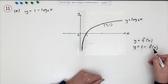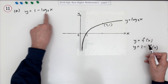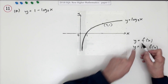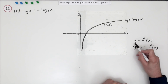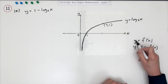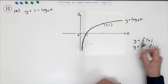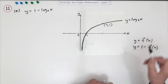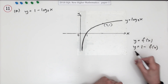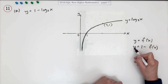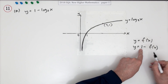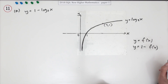If it simply said here's the graph of y equals f of x and it didn't give you the formulas, and then it said sketch the graph of 1 minus f of x, you wouldn't think anything of it. The only difference here is it explicitly says what f of x is. The value of that function is equivalent to the y coordinate, so the new y coordinate will be 1 take away the old y coordinate.